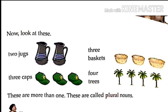As you can see students, on the left side there is a picture of two jugs, next to it a picture of three cups. On the right-hand side, a picture of three baskets and next to it, four trees. One thing is common from this — all of them are showing more than one item. So these are more than one, so these are called plural nouns.